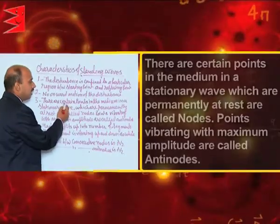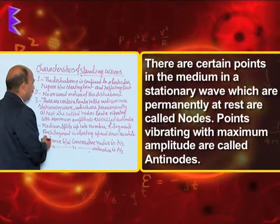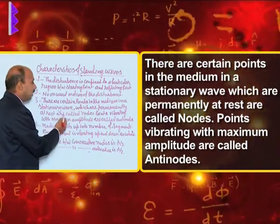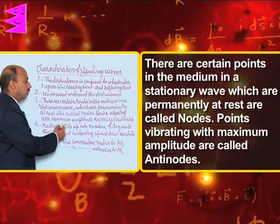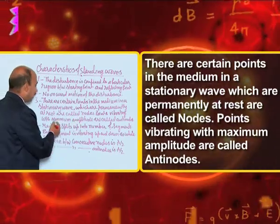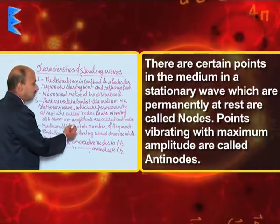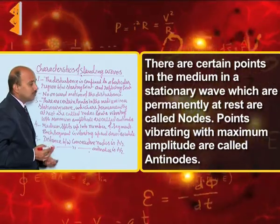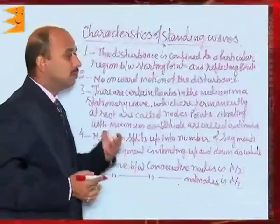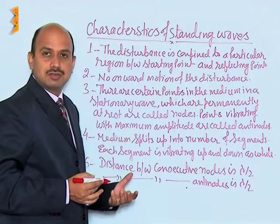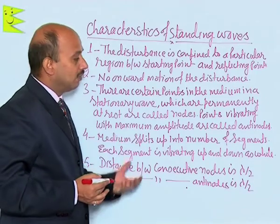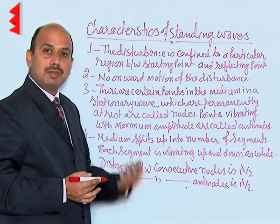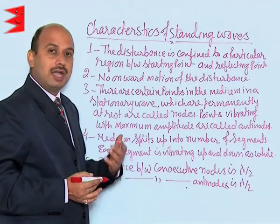The third one is that there are certain points in the medium in a stationary wave which are permanently at rest — these are called nodes — and points vibrating with maximum amplitude are called antinodes. So the points which are permanently at rest are referred to as nodes, and the points or particles vibrating with maximum amplitude are called antinodes.